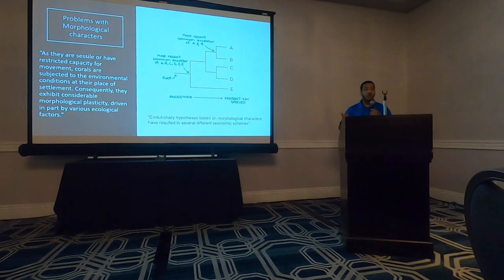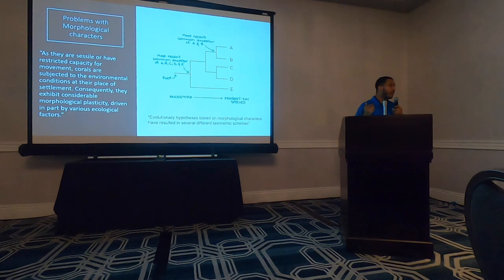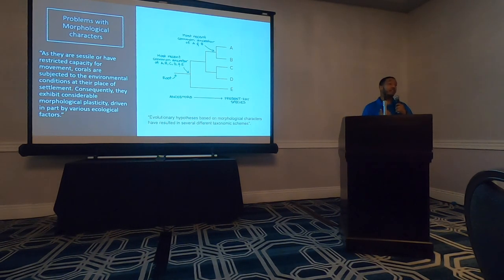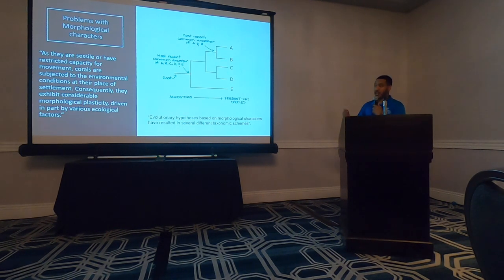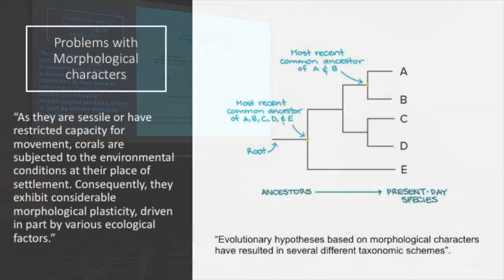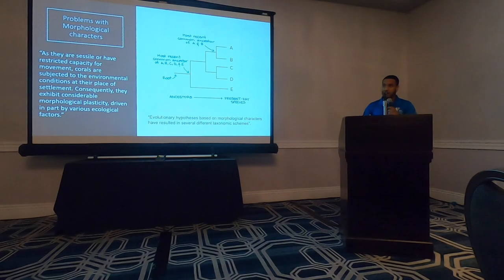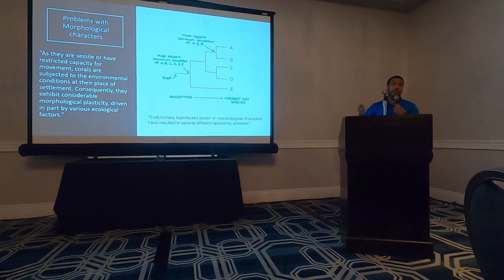There is a problem with this. Because corals are sessile — they don't move — they are often subject to the conditions of their environment. We may find one species of coral in one location and in a completely different location the same species may look completely different. This makes it really messy when we're trying to classify and identify species using morphological characteristics. As a quote puts it: corals are subjected to environmental conditions at their place of settlement, and consequently they exhibit considerable morphological plasticity driven in part by various ecological factors.